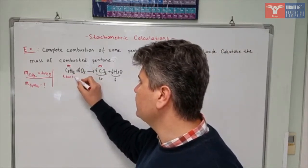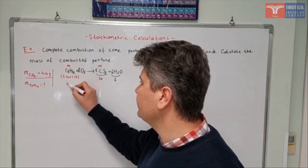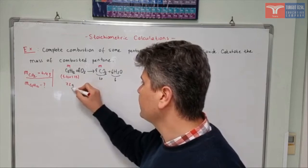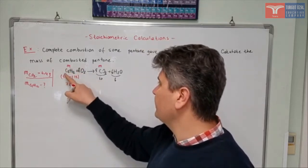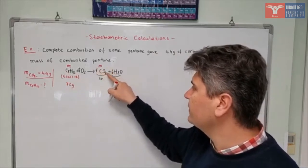plus hydrogen is 1, so 1 times 12. If you calculate this, you'll find it as 72 grams. So mass of 1 mole of this one is 72 grams. Then it will correspond to mass of 5 moles of carbon dioxide.